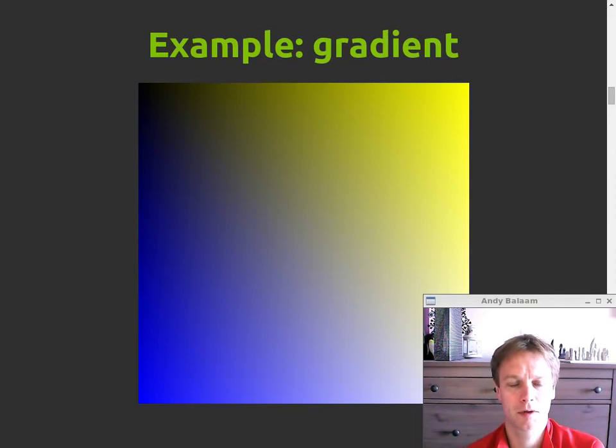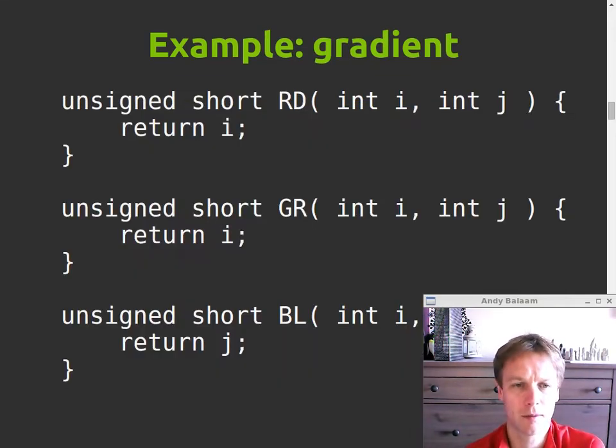Another example, if we wanted some colors blending nicely from one place to another, we would return different values for different inputs. So our red, green and blue functions all take in these i and j, which are basically the x coordinate and the y coordinate. i is the x coordinate, j is the y coordinate. So in our example here, we make our gradient by returning the x coordinate for the red and the green functions and the y coordinate for the blue functions. So that means that red and green change gradually from left to right and blue changes gradually up and down. And that's where we get that lovely gradient.